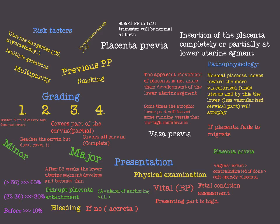In the last video I talked about obstetric bleeding definition and the types of obstetric bleedings. We started talking about obstetric bleeding in detail with abruption placenta in the previous video, and this video I'm going to talk about another condition: the second most common cause of postpartum hemorrhage, which is placenta previa.